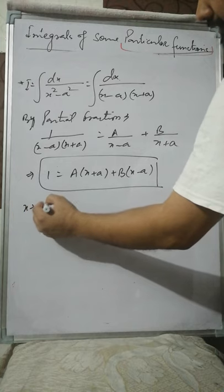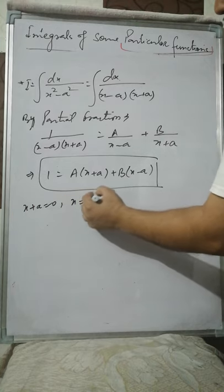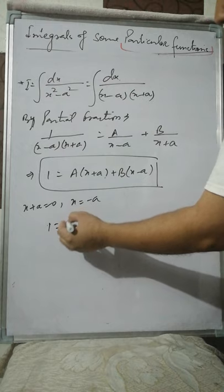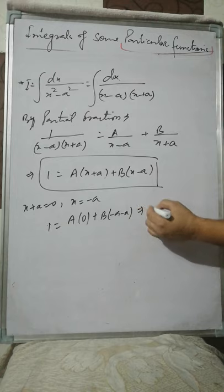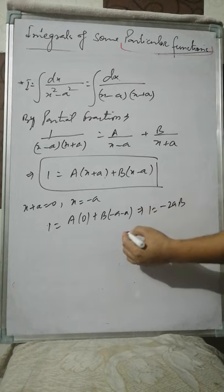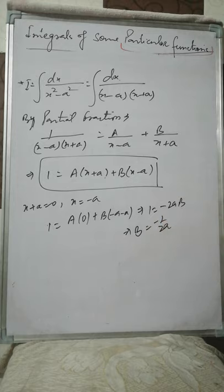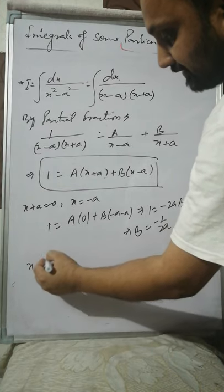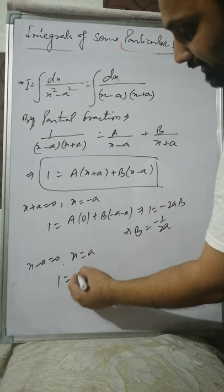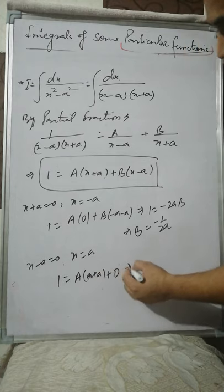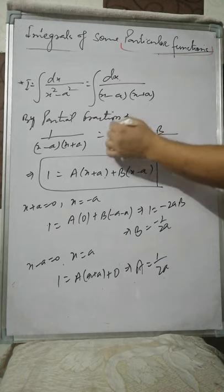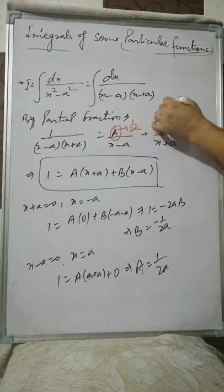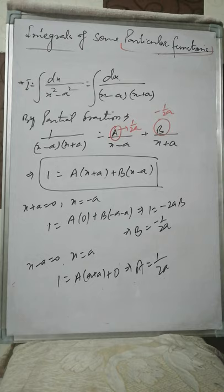To find the value of B, we put the first factor equal to zero: x equals minus a. This gives 1 equals A times zero plus B times (minus 2a), so B equals minus 1 over 2a. Similarly, putting x equals a gives 1 equals A times 2a, so A equals 1 over 2a.